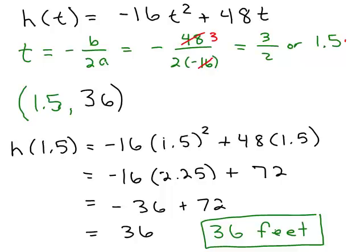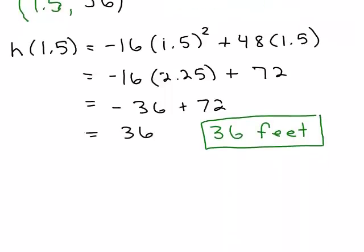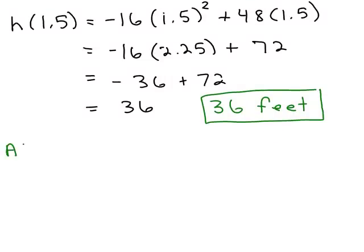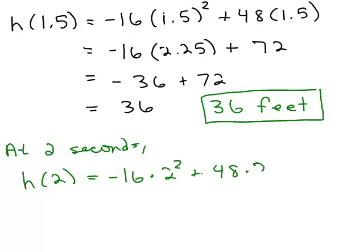And you can see what it is at 2 seconds. You could plug in 2 for t and you could see that it's going to be shorter. So, let's just do that. What would it be at 2 seconds? We would say H(2) is -16 times 2 squared plus 48 times 2. So, that's -16 times 4, 48 times 2 is 96. -64 + 96. I think that's 32.